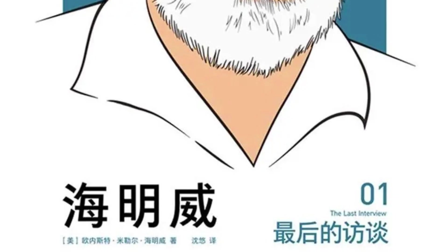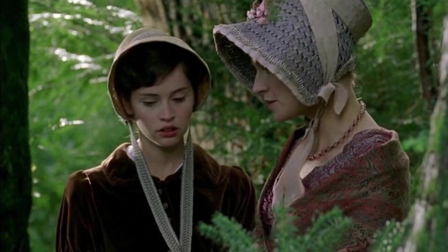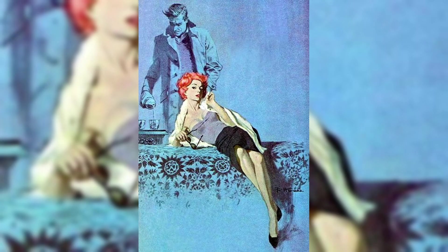Moreover, the theme of love in the novel is also worth exploring. Love in the novel is not only the driving force of the storyline, but also the author's criticism of the marriage system and the status of women in society at that time. The love story between Catherine and Henry not only shows their sincere feelings, but also reflects the restrictions and oppression of love by the marriage system and social concepts of the time. Through this approach, the author allows the reader to think more deeply about the nature of marriage and love, and the impact of society on them.